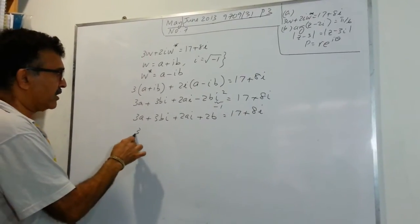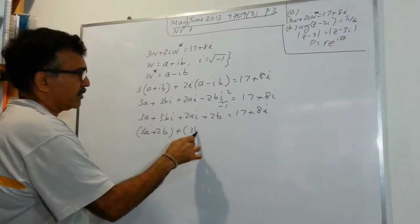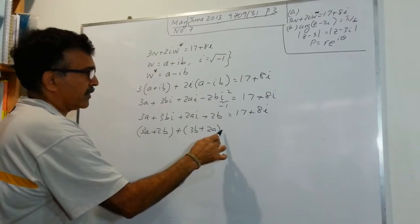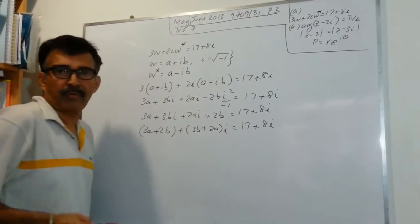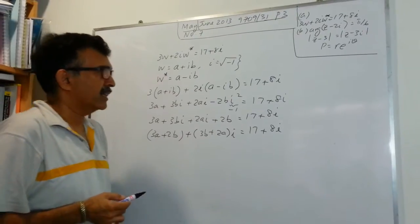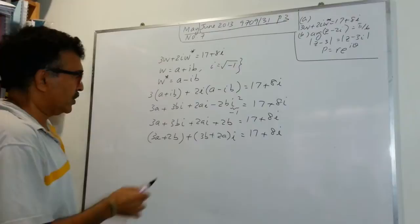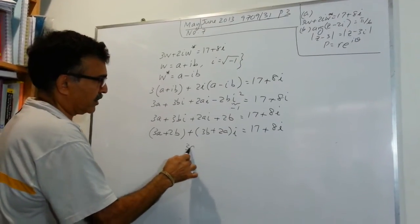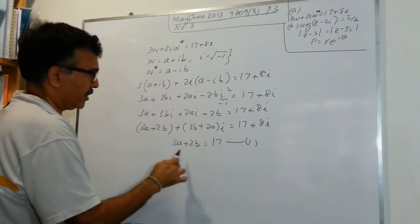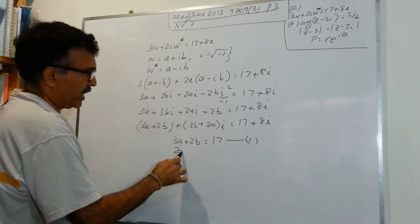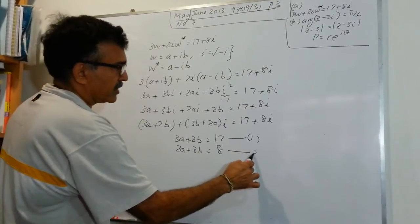Now we can write 3A plus 2B plus (3B plus 2A)I equals 17 plus 8I. So what are we going to do? We are going to equate the real parts and the imaginary parts. So we can write 3A plus 2B equals 17, equation 1. We will have 2A plus 3B equals 8, equation number 2.